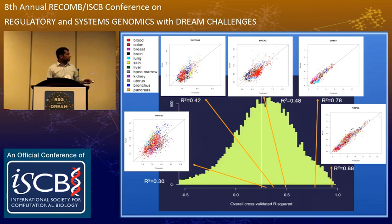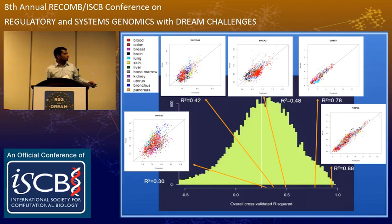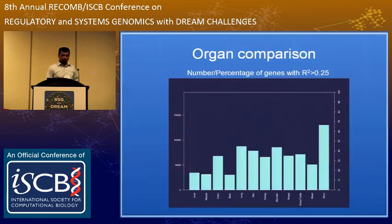Let me show a few examples of what different R-squared values look like. At 0.3 there is some correlation but also a lot of noise, all the way up to TOP2A which has a very high R-squared. Note that this is the 45-degree line — I'm not talking about correlation of predicted versus actual; I'm talking about actual equality of predicted versus actual.